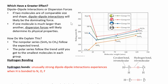This graph shows boiling point versus molecular weight, where each color represents a different family of molecules. In general, as you increase the molar mass, you increase the boiling point. But water, HF, and NH3 have ridiculously high boiling points for their size. What's special about these three molecules? They have a very specific type of dipole-dipole interaction called a hydrogen bond.